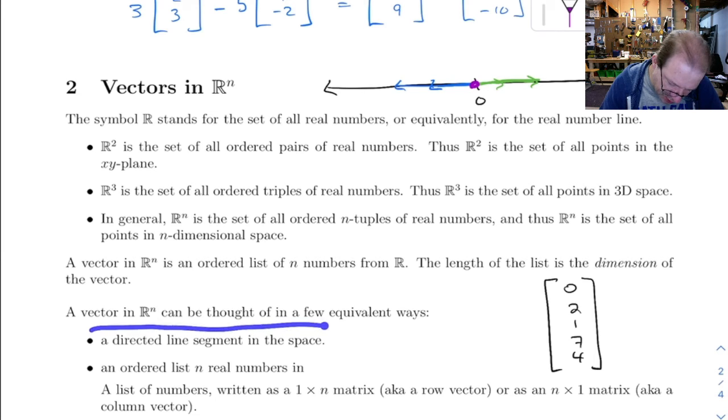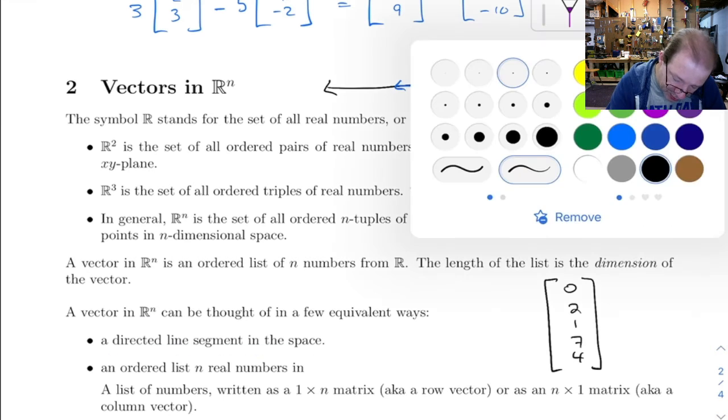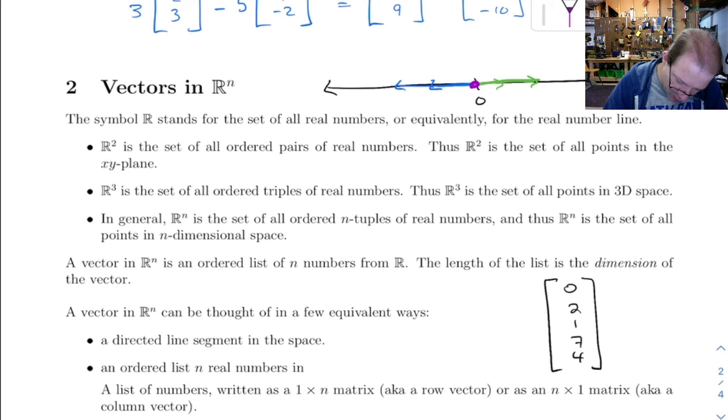So there are a few different ways we can think of a vector in R^n. You can think of it as a directed line segment in the space, and we can say space is n-dimensional.